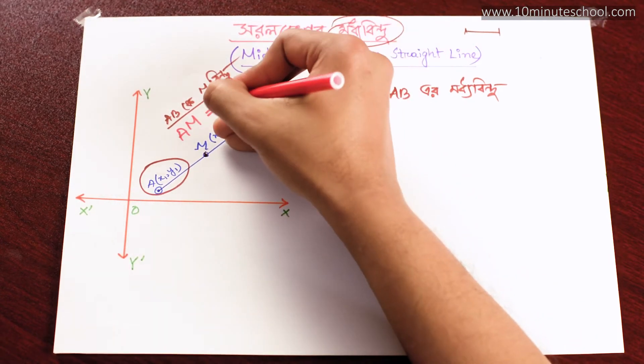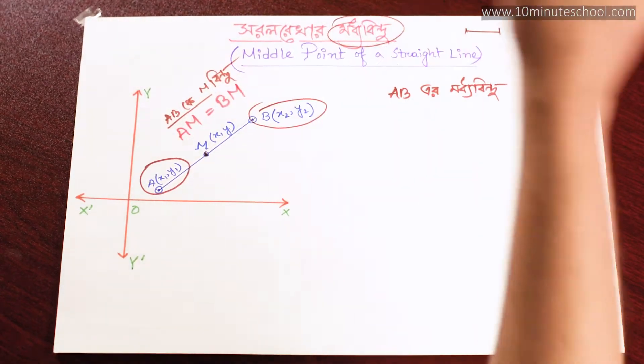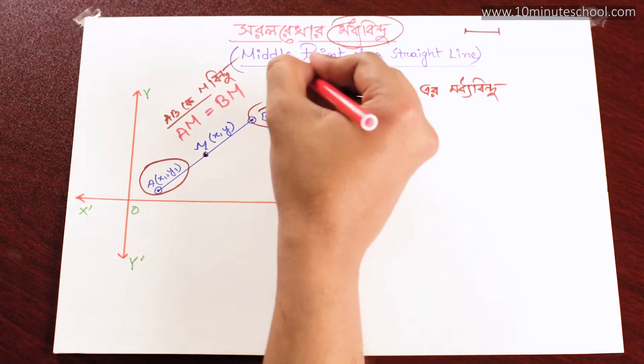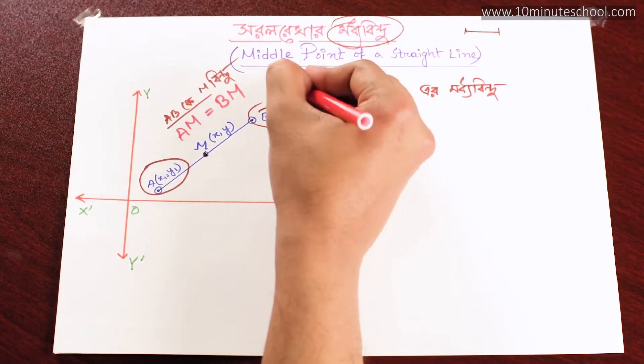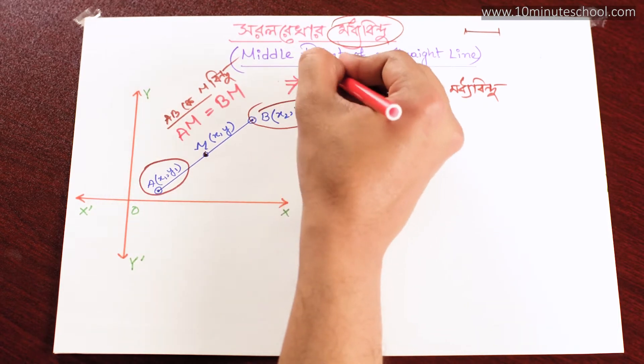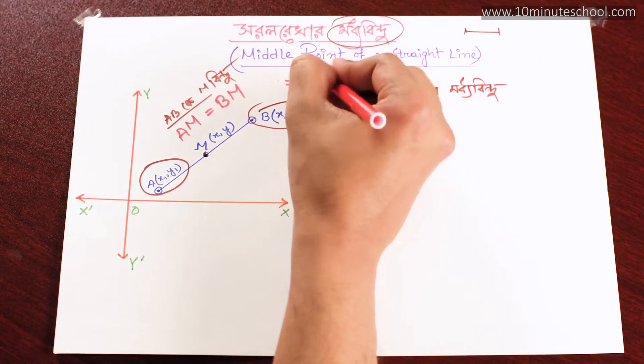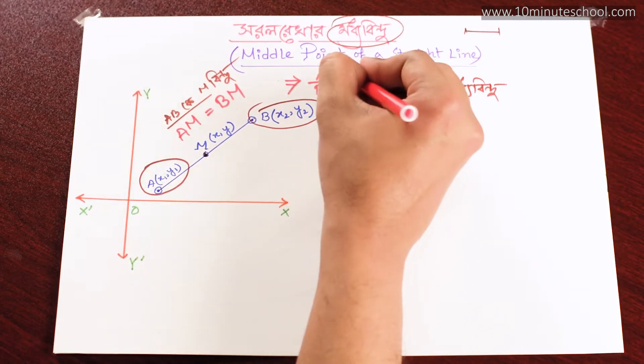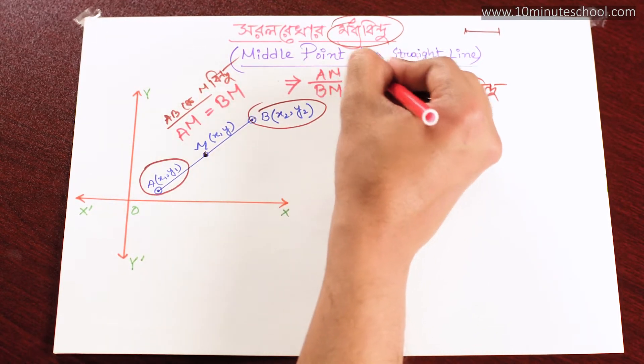AM is equal to BM. তো একে আমরা এভাবে লিখতে পারি না? AM divided by BM is equal to 1.